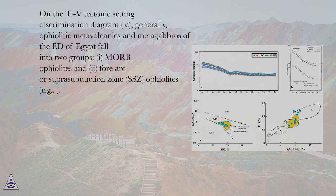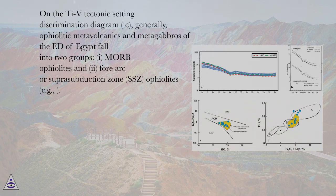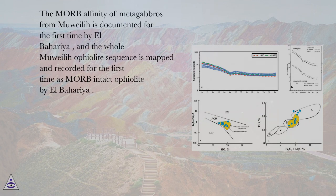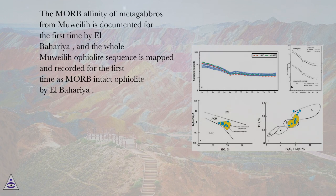On the Ti-V tectonic setting discrimination diagram (C), ophiolitic metavolcanics and metagabbros of the Eastern Desert of Egypt generally fall into two groups: (I) MORB ophiolites and (II) forearc or supra-subduction zone (SSZ) ophiolites. The MORB affinity of metagabbros from Muweilih is documented for the first time, and the whole Muweilih ophiolite sequence is mapped and recorded for the first time as MORB-type ophiolite.